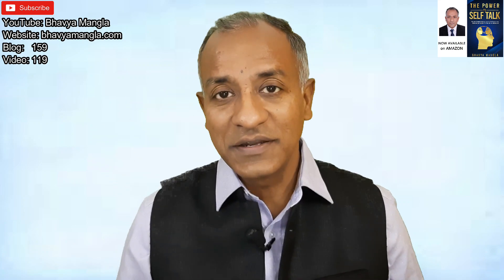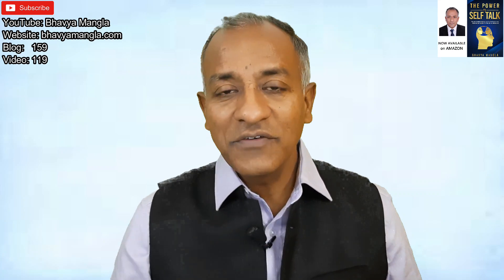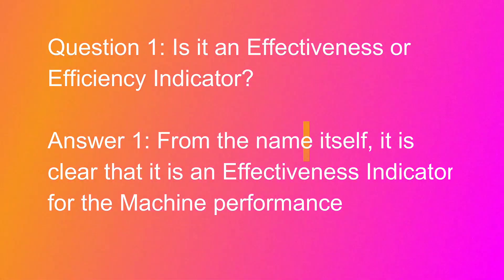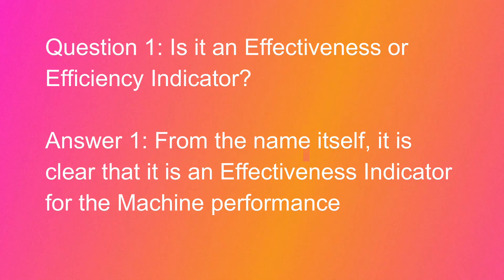Now let's address five key questions commonly discussed in industry. The first question is: when calculating OEE, is it an efficiency indicator or an effectiveness indicator? From the definition it is very clear — we are talking about Overall Equipment Effectiveness. Effectiveness means what has been planned versus what has been achieved. So it is an effectiveness indicator, not an efficiency indicator, as is generally assumed in industry.